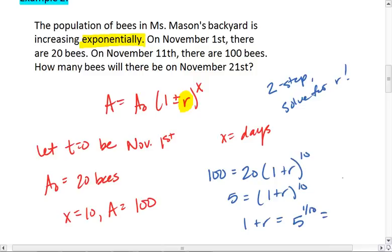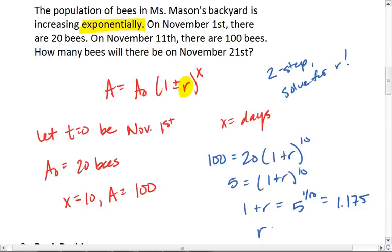And please, when you're entering this into your calculator, remember to put parentheses around that 1/10th. Otherwise, your calculator will read it as 5 divided by 10. Well, 5 to the 1/10th is 1.175. So R is 0.175.